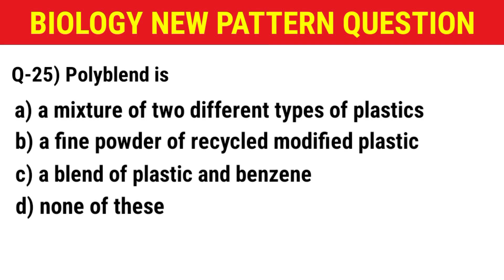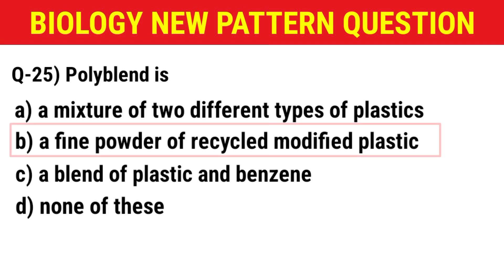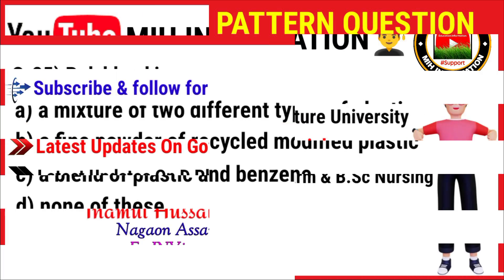Question number 25: Polyblen is — (A) a mixture of two different types of plastics, (B) a fine powder of recycled modified plastic, (C) a blend of plastic and benzene, (D) none of these. The correct answer is option B: a fine powder of recycled modified plastic.